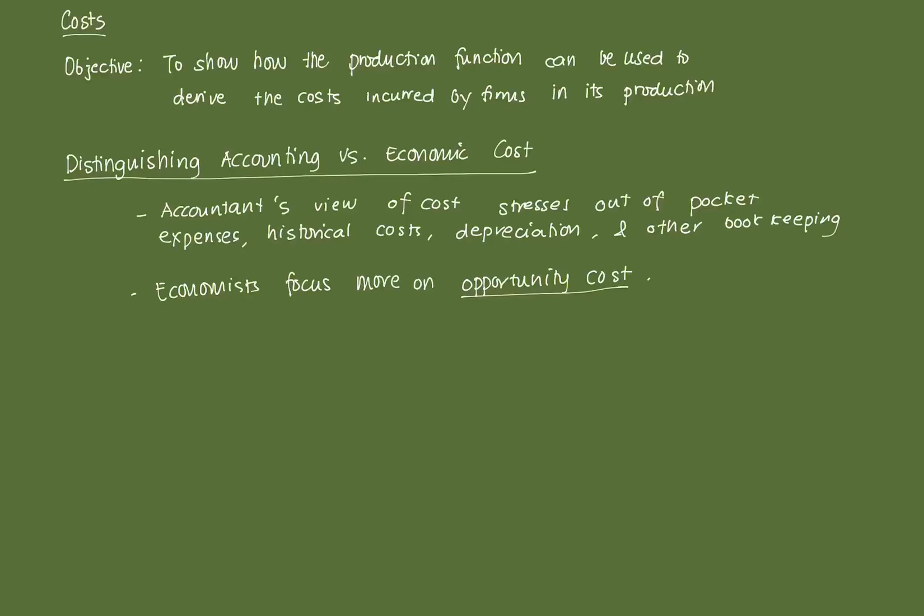Central to the concept of the theory of the firm in understanding firm behavior is, of course, understanding costs. Our objective in understanding costs is to show how the production function can be used to derive the costs incurred by firms in its production. Firms are not unlimited in their capability to produce — they have a constraint, which is the level of inputs that they put in.